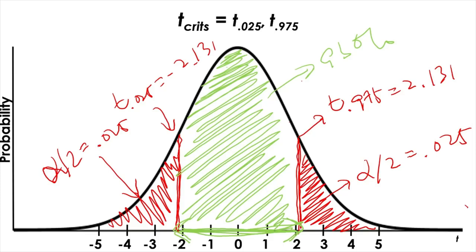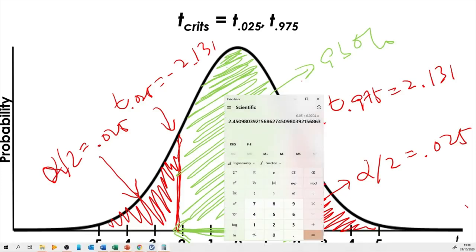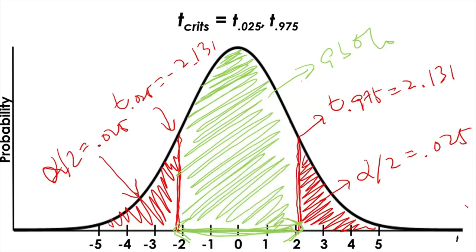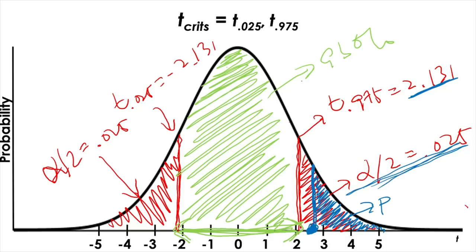Our t-statistic was 2.451. Since 2.451 > 2.131 (the positive critical value), the statistic is beyond the critical boundary, indicating statistical significance. The p-value is the area under the curve to the right of 2.451. This one-tailed p-value is less than alpha/2 = 0.025. So the statistic is statistically significant.